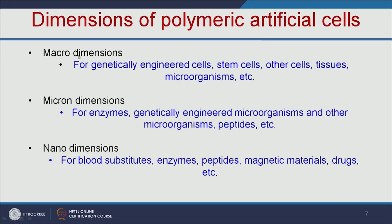In macro dimensions, we can encapsulate genetically engineered cells, stem cells, and even microorganisms. In micron dimensions, we can encapsulate enzymes, genetically engineered microorganisms, and peptides. In nano dimensions, we can make blood substitutes or encapsulate enzymes, magnetic materials, drugs, and other peptides. We can encapsulate these materials into polymeric artificial cells for various applications.